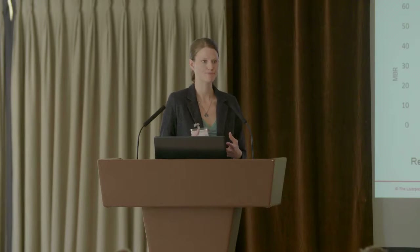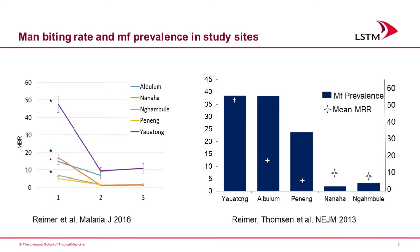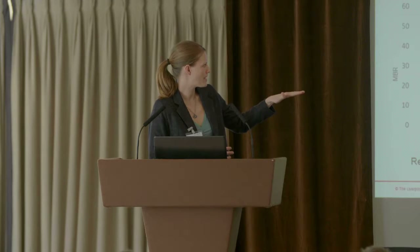Starting with the man-biting rate results across the five villages: in year one, immediately before the bed net distribution, we had mean nightly man-biting rates up to about 50 bites per person per night. That decreased significantly in the year after nets were distributed, and we also saw lower biting densities in the third year. For microfilaria prevalence, in the high transmission villages it was nearly 40%, corresponding to about 80% antigen prevalence, while in the lower transmission villages it was around 5% or less. In the village Yawatong, high biting was also associated with quite high disease prevalence.